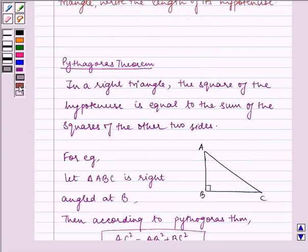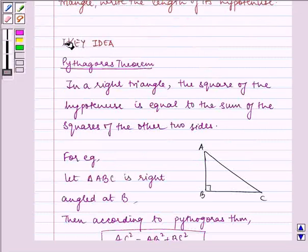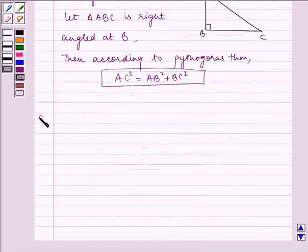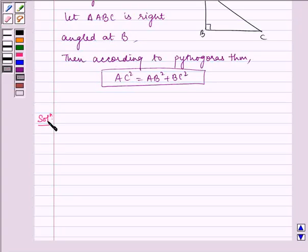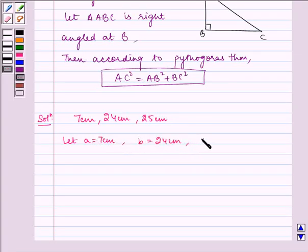This is our key idea to the question. Now let us write the solution. Given to us is sides 7 cm, 24 cm and 25 cm. Let A equal 7 cm, B equal 24 cm and C equal 25 cm. Here we can see the larger side is C, which is equal to 25 cm.